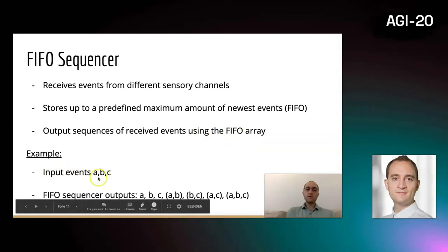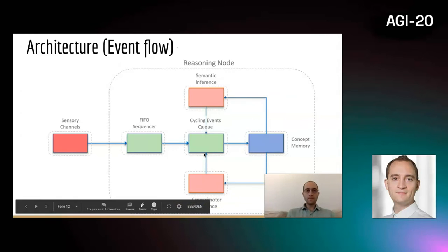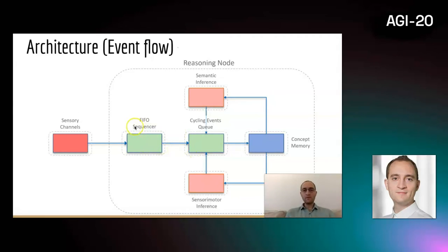For instance, when you have input events A, B, C, the FIFO sequencer can already create a bunch of sequences like the individual events or combinations like A, B, B, C, A, C, or A, B, C. From here we go into the cycling events queue.